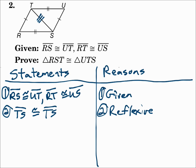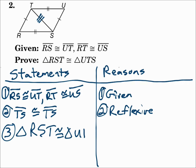Mark that in the picture — now we have all three pairs of sides. Since all three pairs of sides are congruent, the triangles are congruent. Write it just the way it says: triangle RST is congruent to triangle UTS, because all three pairs of sides are congruent — that's SSS. Any time you're proving triangles congruent, use what you're given and then use that chart for all the other pieces, like shared sides or midpoints. Once you've got all the pieces, say the triangles are congruent.